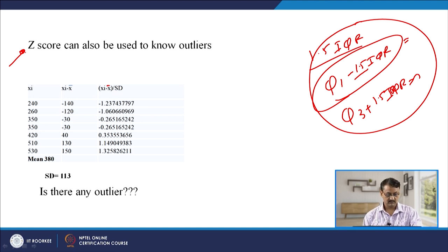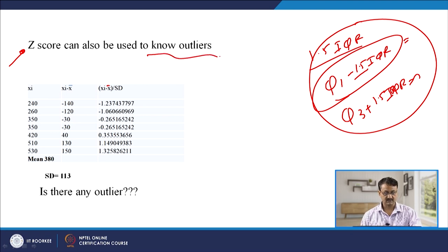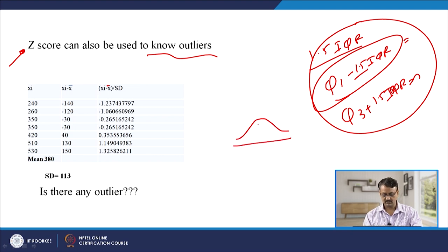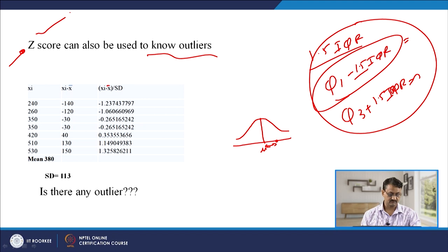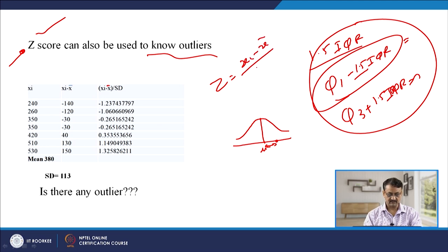If we calculate the Z score we can easily find out the outliers. Now what is Z score? Z score is nothing but how far a particular point is away from the mean. So this is your distribution, this is your mean — if you want to know how far a specific point is from the mean, that is calculated using the Z score. The formula for Z score is: Z = (Xi minus X-bar) divided by standard deviation.